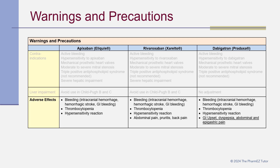Adverse effects of all three DOACs include bleeding, intracranial hemorrhage, hemorrhagic stroke, GI bleeding, thrombocytopenia, and hypersensitivity reaction. Abdominal pain and GI upset can also occur with rivaroxaban and dabigatran.